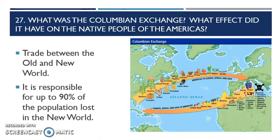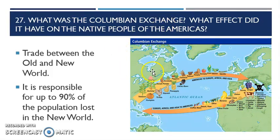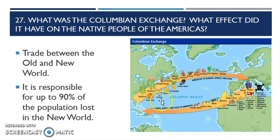We're on part four of the first quarter study guide for the exam. What was the Columbian Exchange and what effect did it have on the native people of the Americas? When you look at this — this is the old world, Europe, and this is the new world, the Americas. Here are all the things that are going to come from the Americas over to the old world. You get a lot of vegetable items — squash, potatoes, tomatoes, corn, and tobacco.